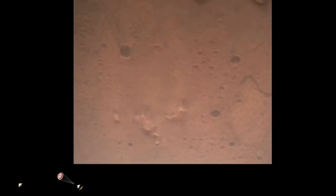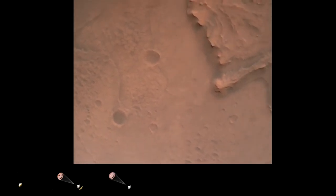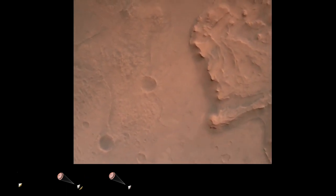Nav filter converged. Velocity solution, 3.3 meters per second. Altitude, 7.4 kilometers. Now has radar lock on the ground. Current velocity is about 100 meters per second, 6.6 kilometers above the surface.